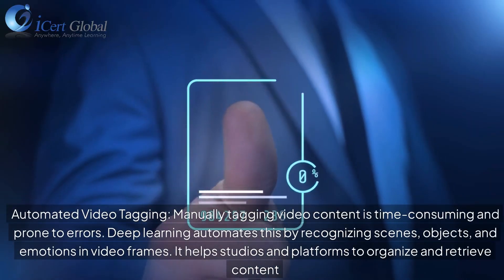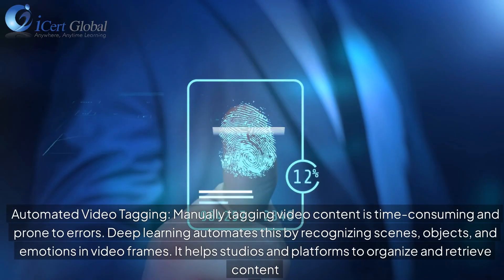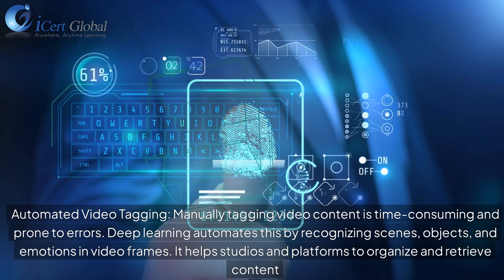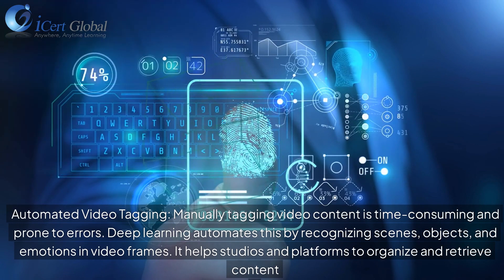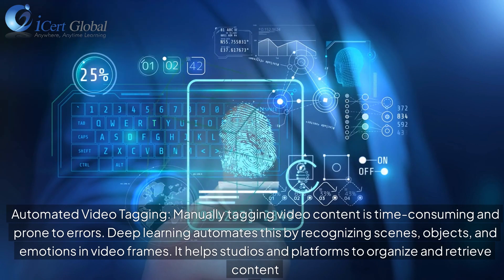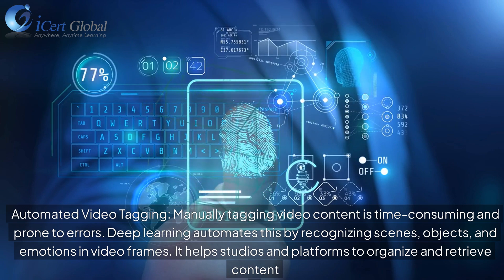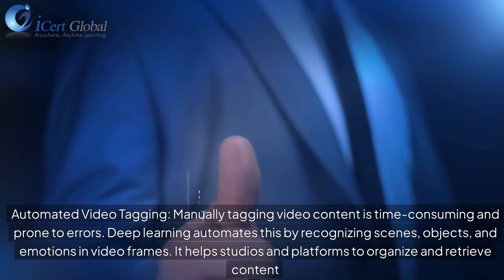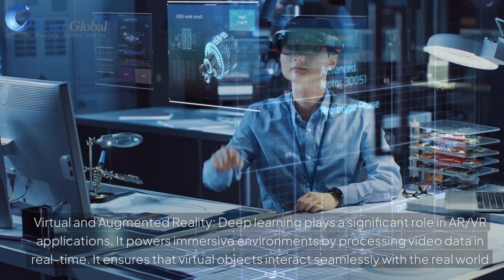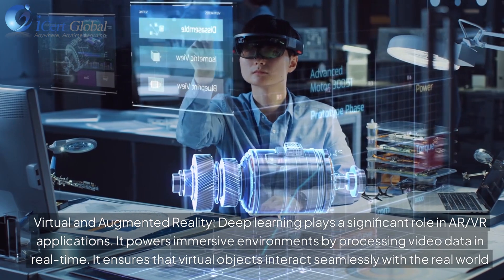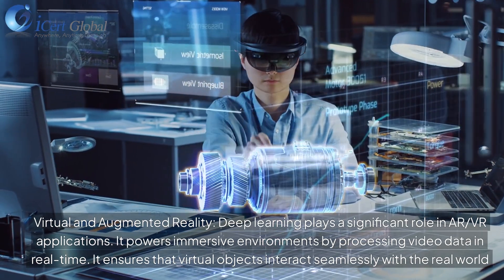Automated Video Tagging. Manually tagging video content is time-consuming and prone to errors. Deep learning automates this by recognizing scenes, objects, and emotions in video frames, helping studios and platforms organize and retrieve content more efficiently.